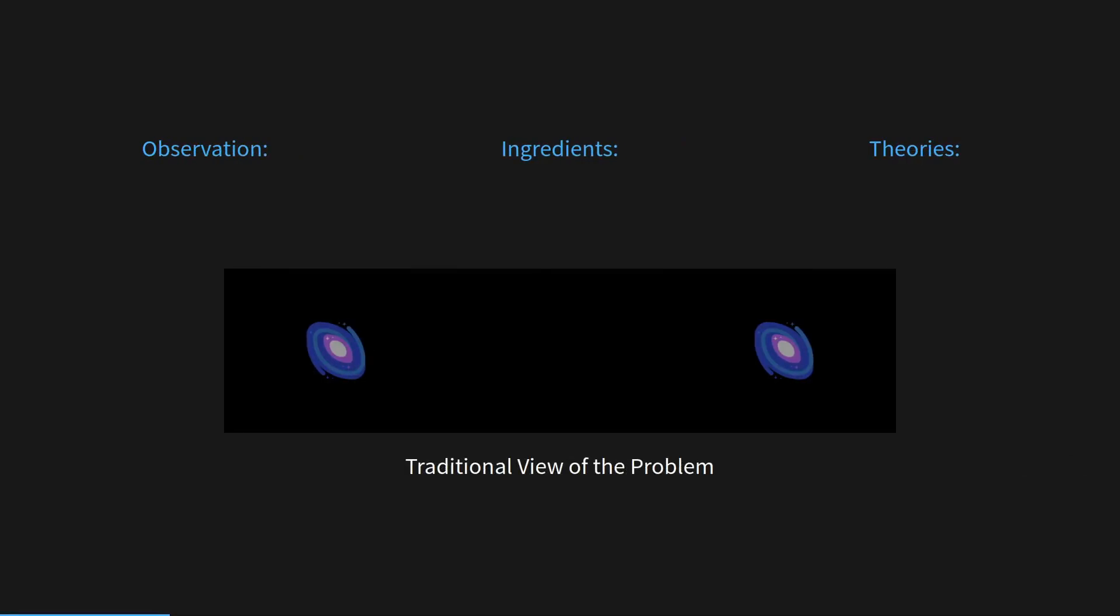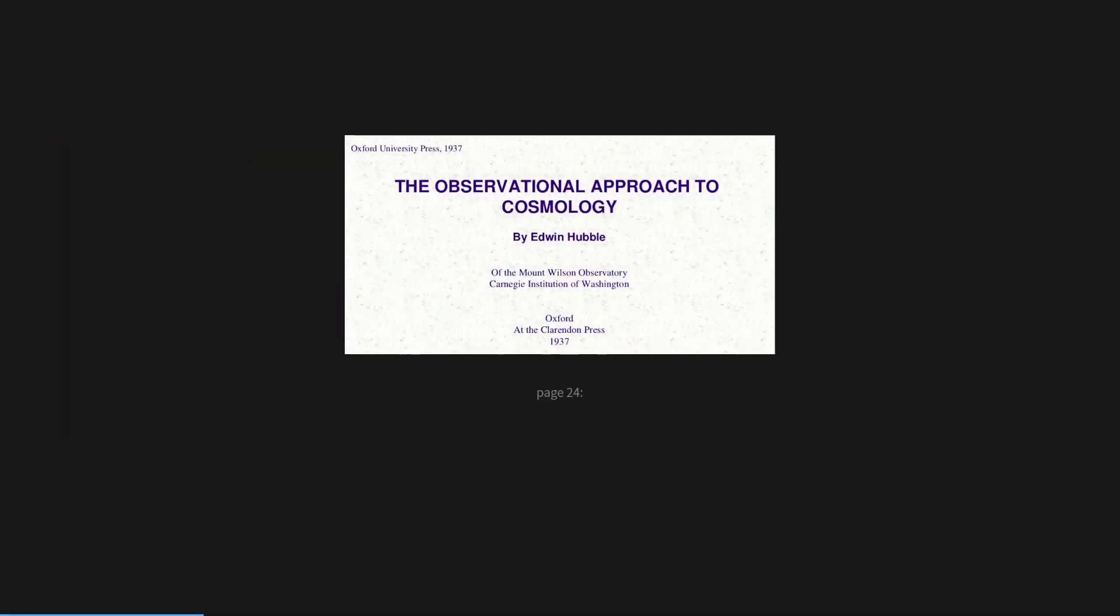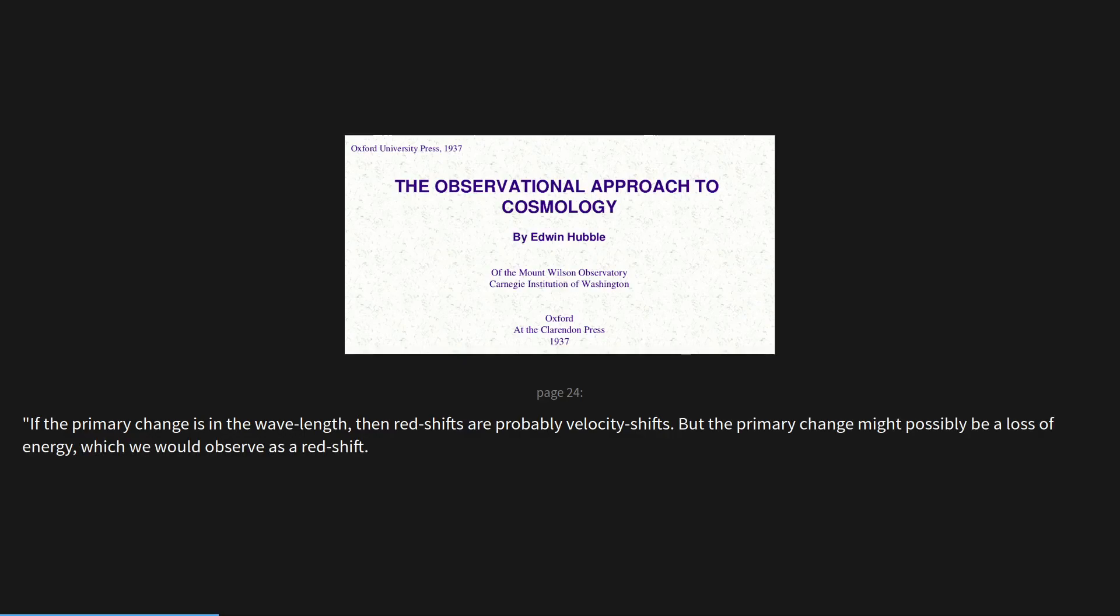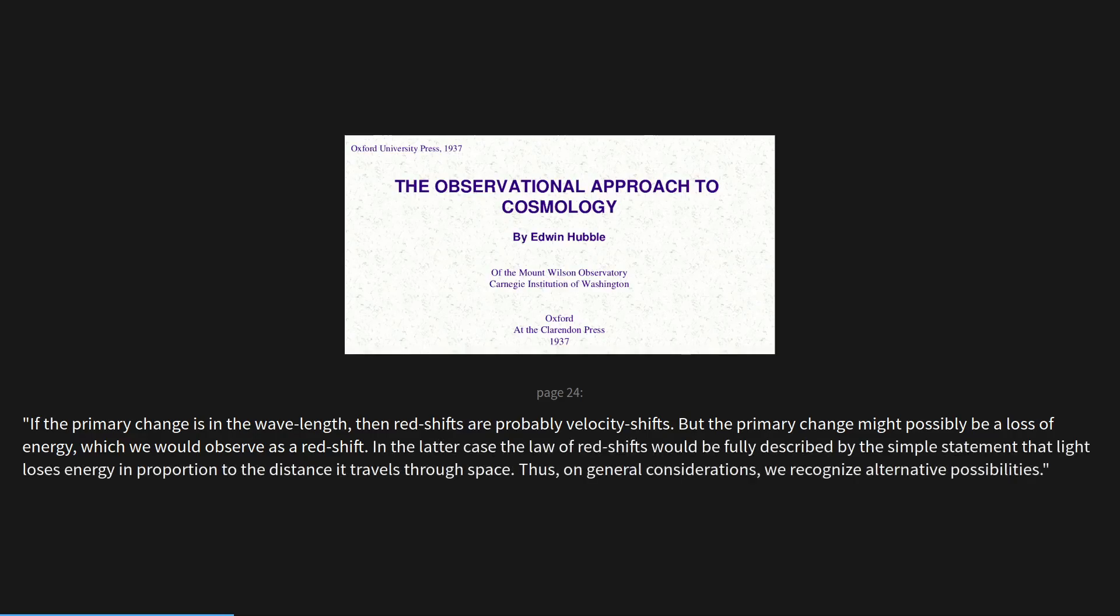This is the traditional view of the problem. It's a cosmic redshift of light traveling through space. So light can be dynamic, or space can be dynamic. I say it's the traditional view, because in 1937, Edwin Hubble writes, if the primary change is the wavelength, then redshifts are probably velocity shifts. But the primary change might possibly be a loss in energy, which we would observe as a redshift. On general considerations, we recognize alternative possibilities. But here's the thing, that's tired light.